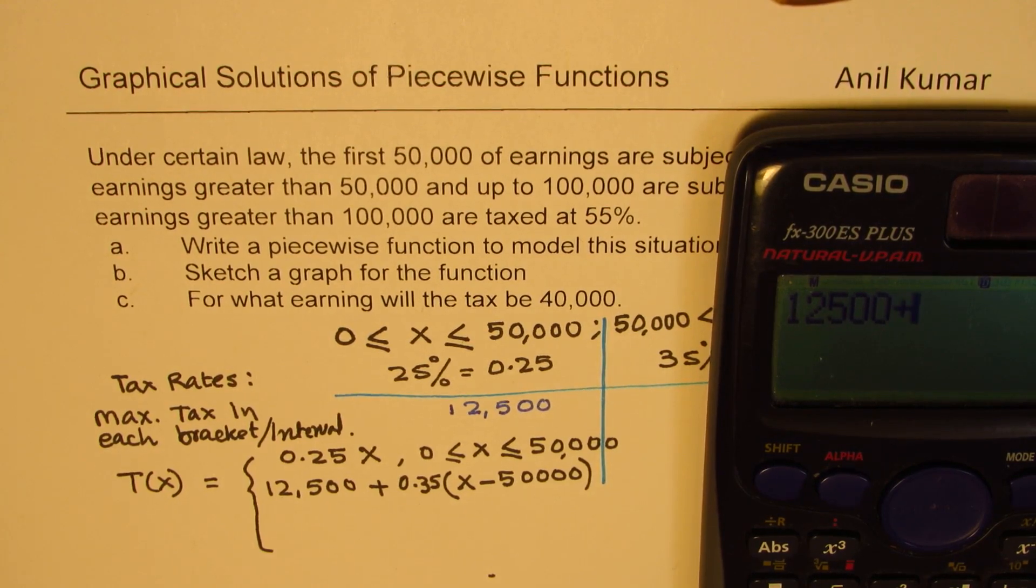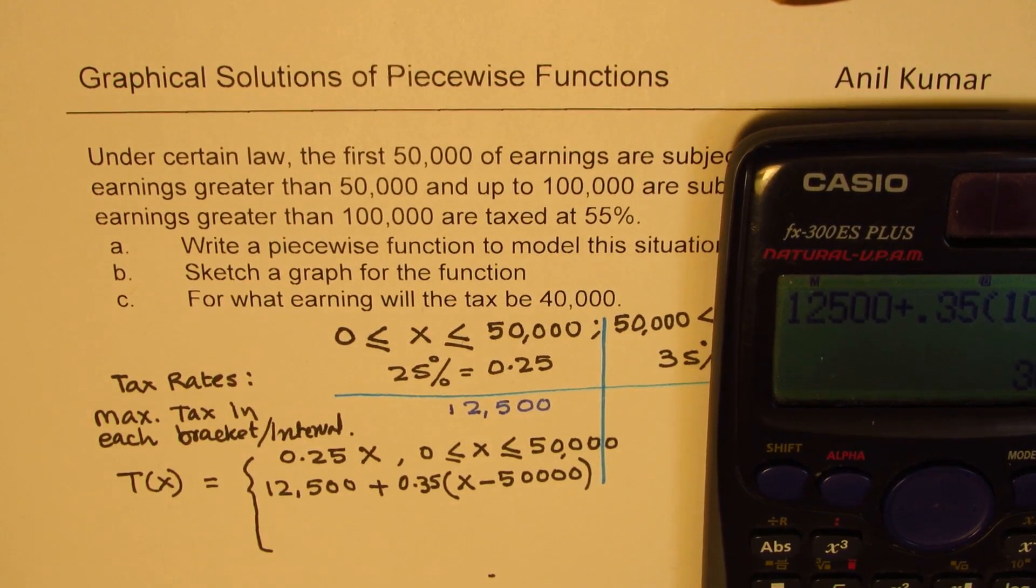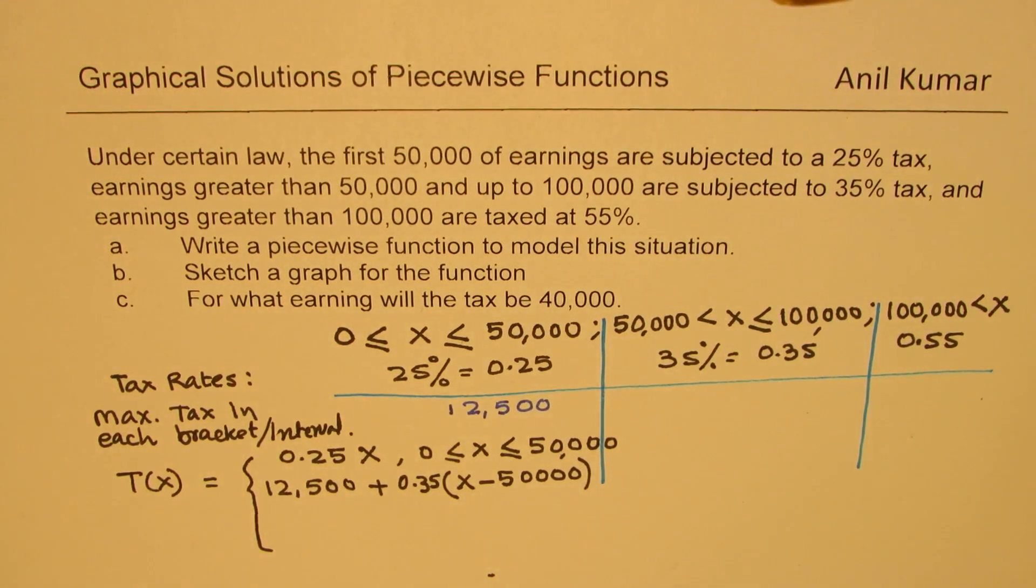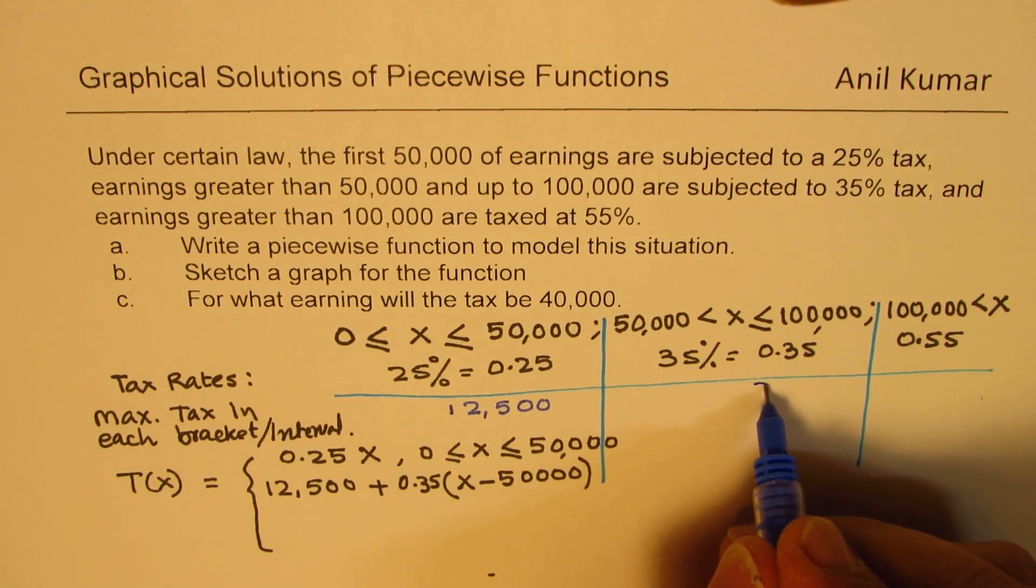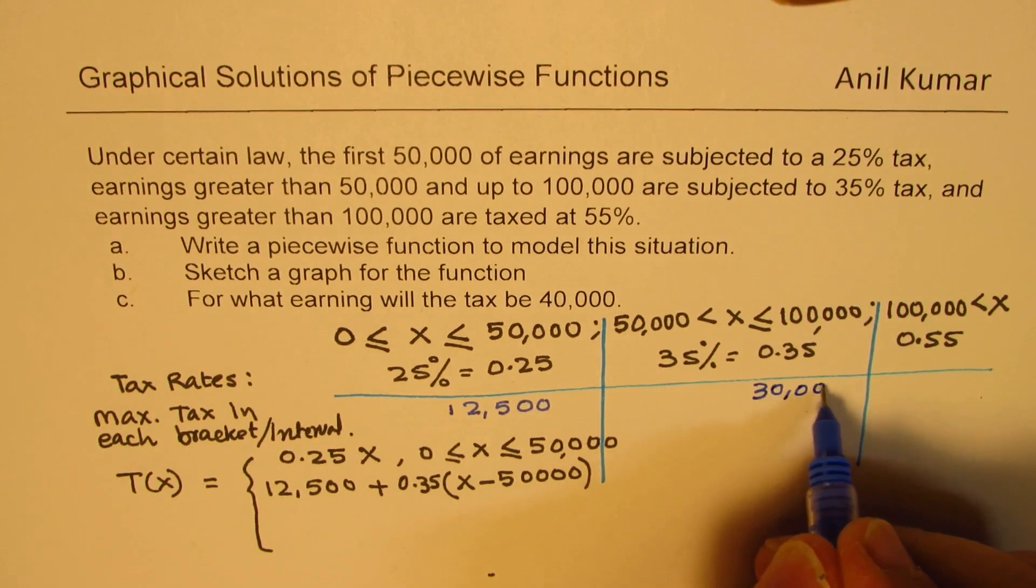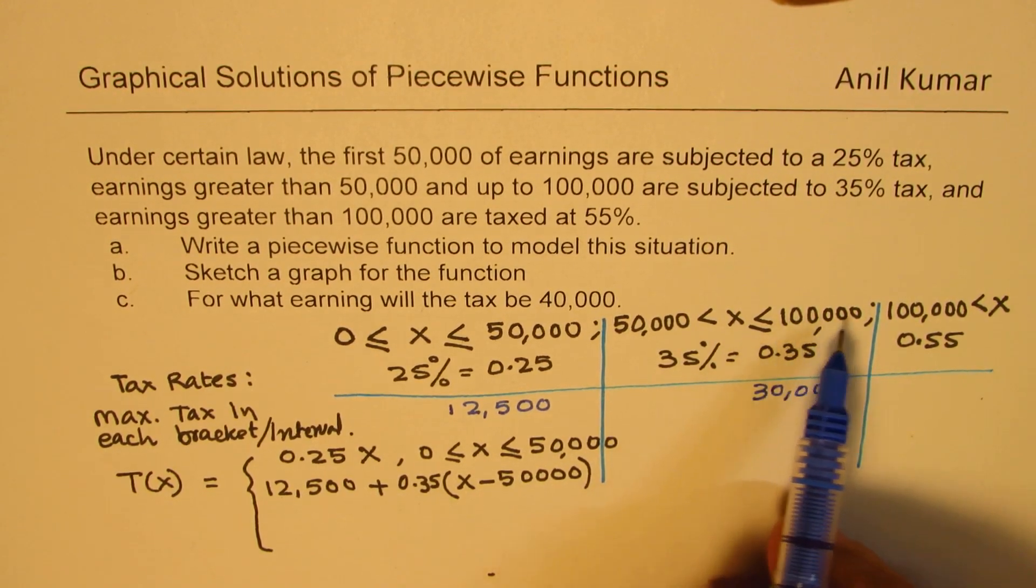For 100,000, how much do you pay? You pay 12,500 for the first 50,000, and on that, you pay 0.35 times 100,000 minus 50,000, which equals 30,000. So in this bracket, the maximum amount which you pay is 30,000, and that is when your earning is 100,000.